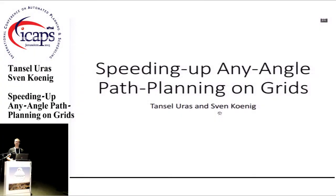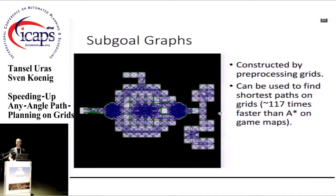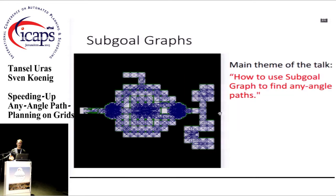Hi, my name is Tan Sedoras. I'm working with Sivan Koenig at the University of Southern California. Today, I will talk about sub-goal graphs. Sub-goal graphs are constructed from grids by preprocessing them, and they can be used to find shortest grid paths much faster than A-star on grids, almost by two orders of magnitude faster. The topic today is about how to modify sub-goal graphs to find any-angle paths.